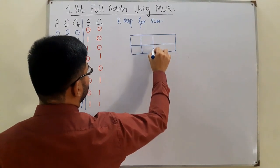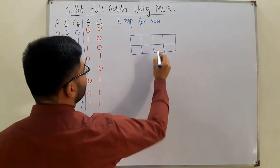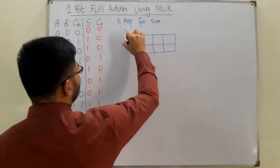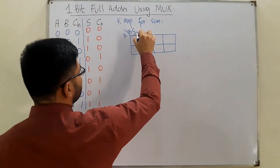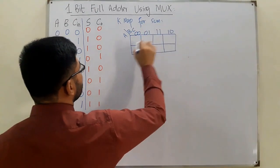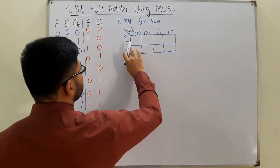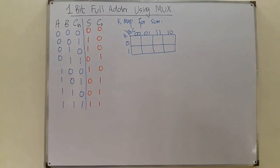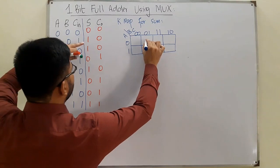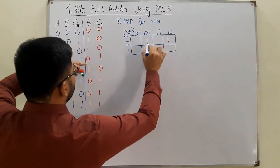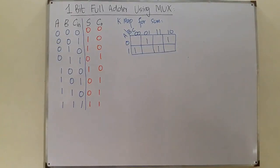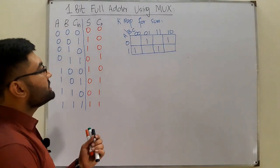Correction: 2 to the power of 3 is 8, not 16. So we have A on one axis and B, C on the other: 0 0, 0 1, 1 1, 1 0 and A: 0, 1. Now we fill in the sum values: 0, 1, 1, 0, 1, 0, 0, 1. This is the checkerboard configuration.